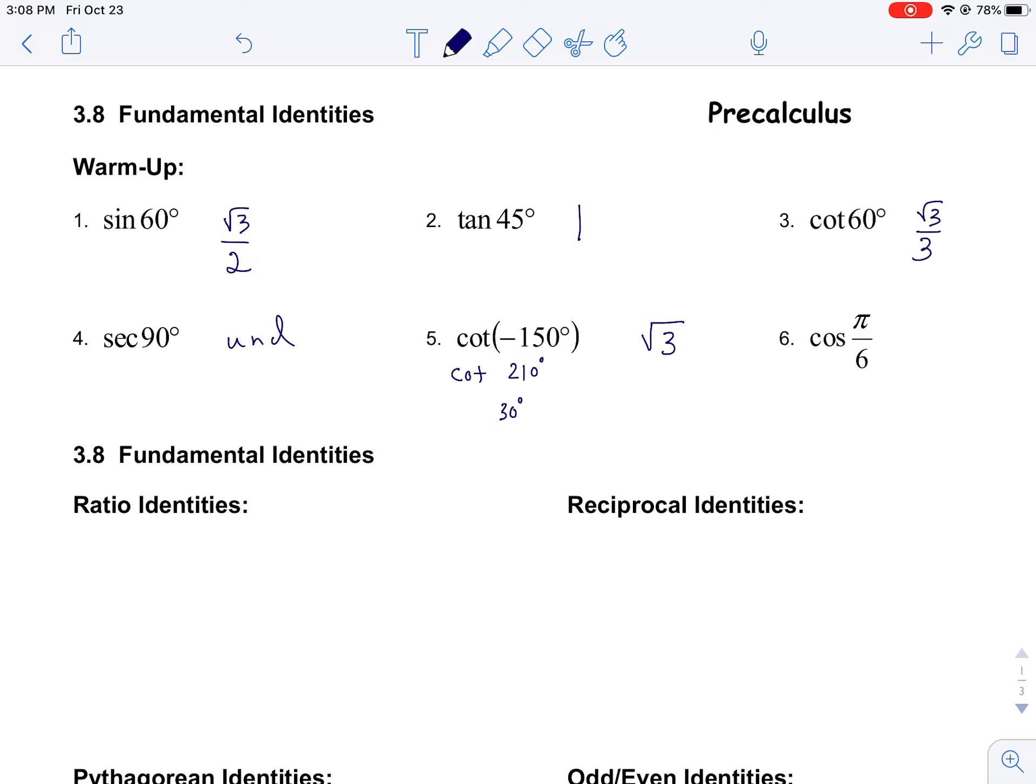And then finally, cosine of π over 6 is the same as the cosine of 30 degrees, so that's also root 3 over 2 in the first quadrant. Pretty quick warm-up there to help you out.